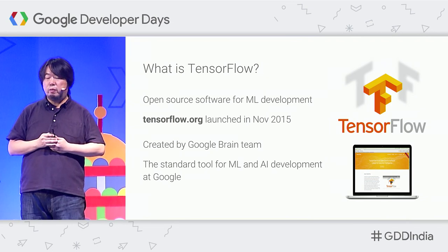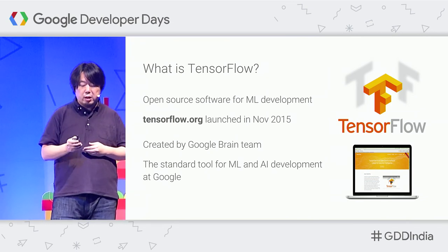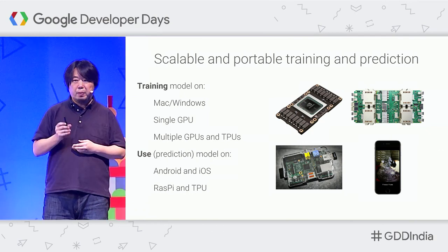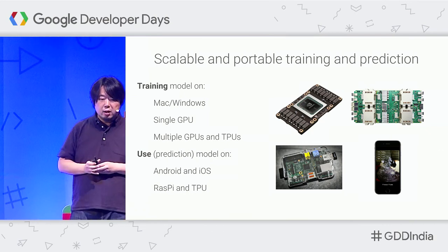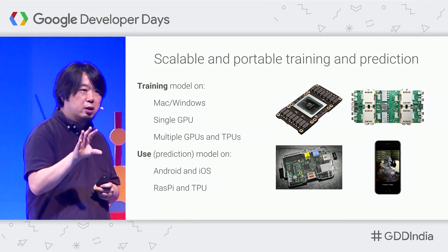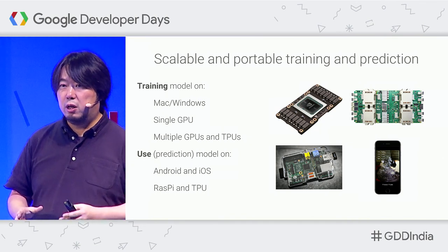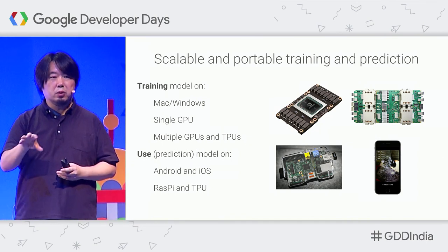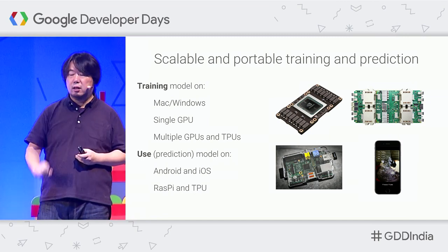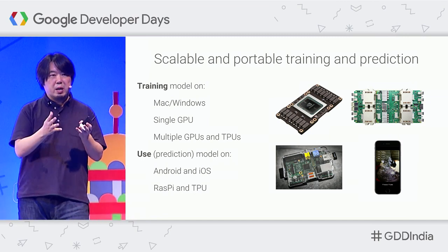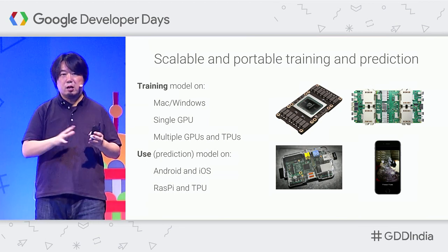TensorFlow is the open-source machine learning development tool used inside Google for developing new machine learning or AI-based services. We open-sourced it in November 2015, and it was created by the Google Brain Team. The benefit you get with TensorFlow is scalability and portability — you can start trying TensorFlow using your own Mac or Windows. TensorFlow has sample code, like classifying handwritten text as digits, that can run on Mac or Windows without much computing resource.